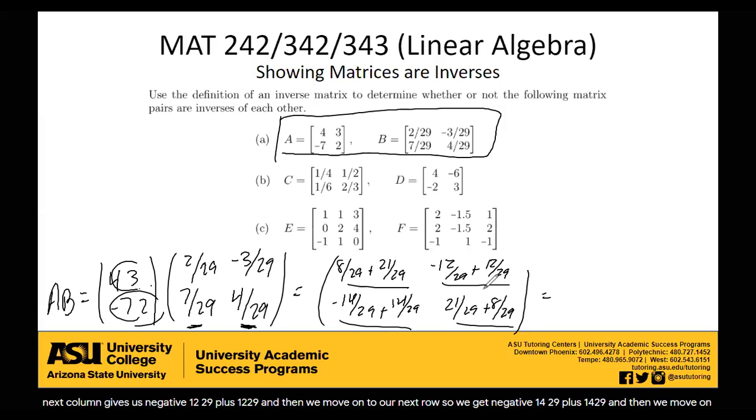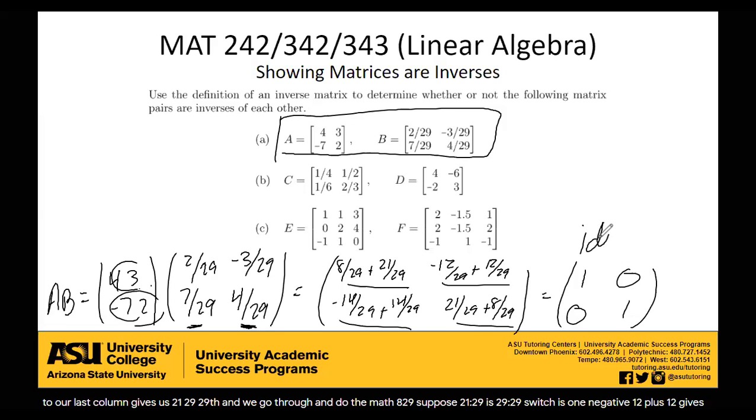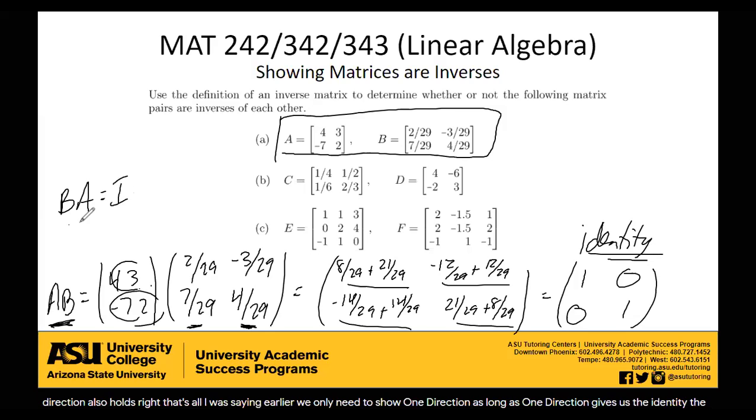And we go through and do the math. 8 29ths plus 21 29ths is 29 29ths, which is 1. Negative 12 plus 12 gives us 0. Negative 14 plus 14 gives us 0. 21 plus 8 is 29. 29 29ths is 1. Hey, this is the identity. So we showed that it works for A times B. The other direction also holds. That's our saying earlier. We only need to show one direction. As long as one direction gives us the identity, the other one will automatically also give us the identity, which means these two matrices are inverses of each other. So yes, they are in fact inverses.